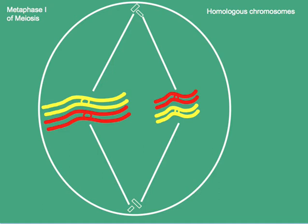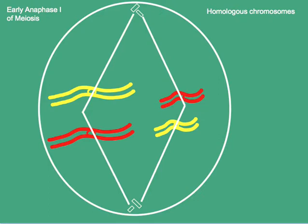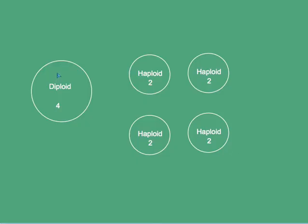A simplified diagram of a diploid cell at metaphase one of meiosis. Homologous chromosomes have paired and assorted independently. As they begin to separate, meiosis allows diploid cells to form haploid gametes or sex cells. If the diploid number is four, then the haploid gametes will each have two chromosomes.